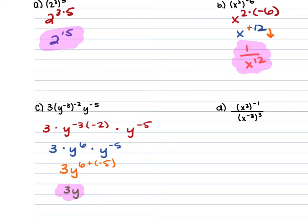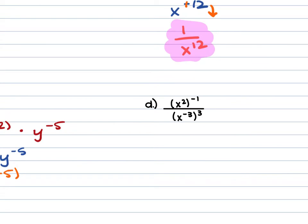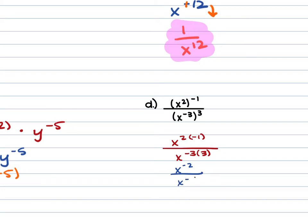With example 1d, we have x squared raised to the negative 1st power all over x to the negative 3rd power raised to the 3rd power. Again, I have a power raised to a power, so I'm going to be multiplying those powers. On the top, we're going to do x to the 2nd times the negative 1st. On the bottom, we're going to do x to the negative 3rd times the positive 3. 2 times negative 1 is negative 2, giving us x to the negative 2nd power. Negative 3 times 3 is negative 9, giving us x to the negative 9th power.